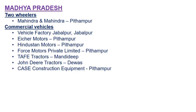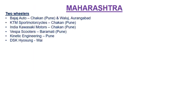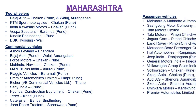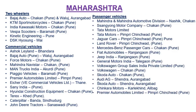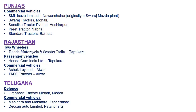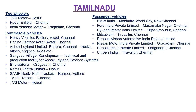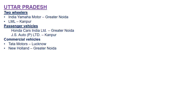In Maharashtra, in the Chakan-Pune area, the two-wheeler section includes Bajaj Auto, KTM India, Kawasaki Motors, Vespa Scooters, Piaggio Vehicles, and Kinetic Engineering at Pune. Both commercial vehicle and passenger vehicle sections have many plants in this area, as shown on screen. Companies in Rajasthan, Telangana, and other states are also shown. In Tamil Nadu, there are many plants for two-wheelers, commercial vehicles, and passenger vehicles, all shown on screen.